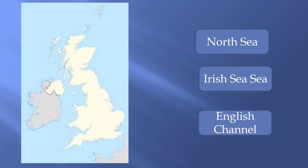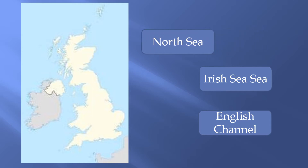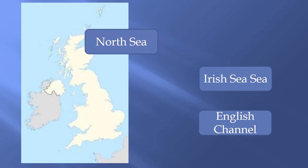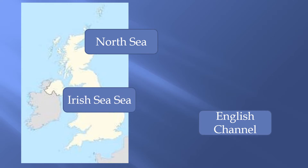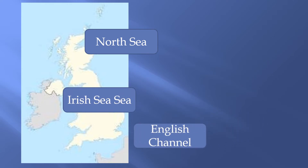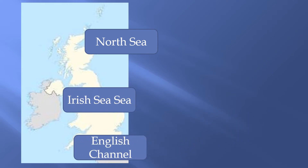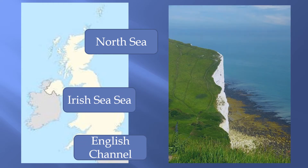The United Kingdom is made up of a number of islands and is surrounded by the North Sea, the Irish Sea and the English Channel. The sea refers to the water closest to the land.